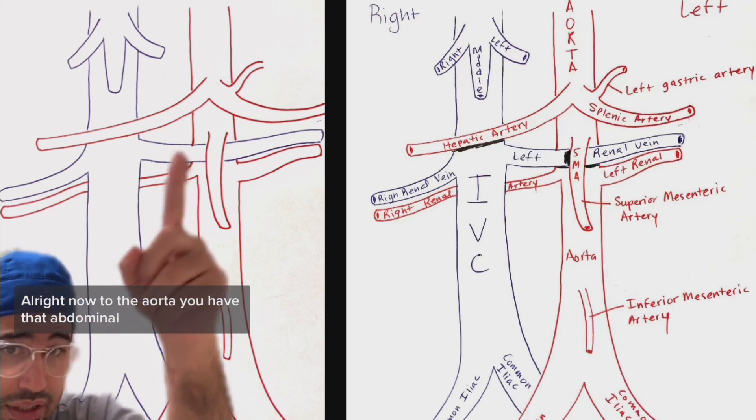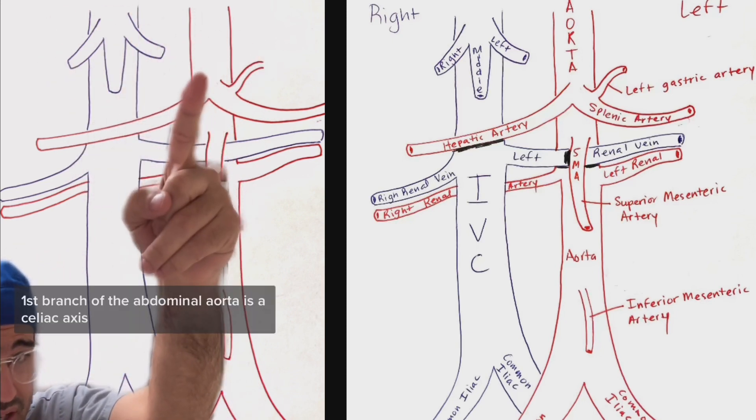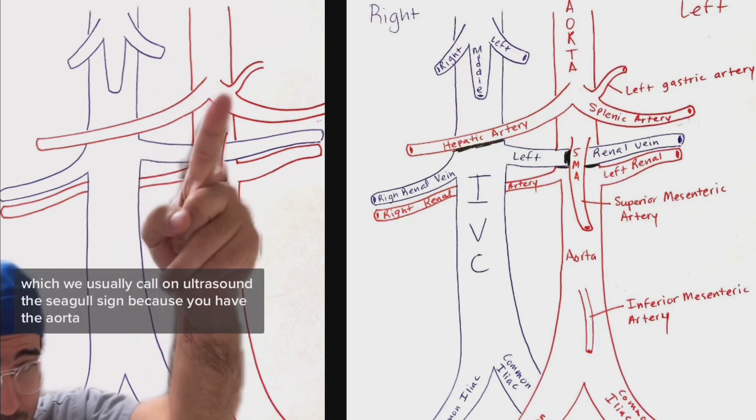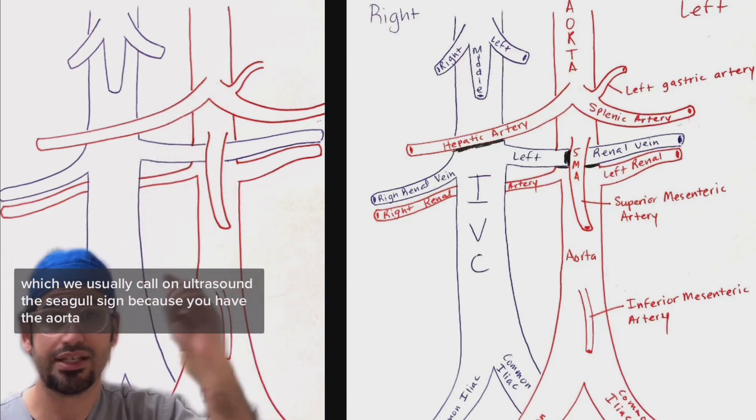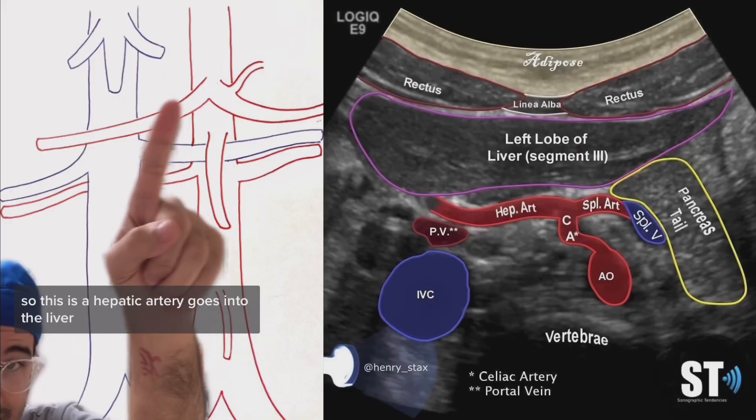All right, now to the aorta. You have the abdominal aorta, your diaphragm would be here. First branch of the abdominal aorta is the celiac axis, which we usually call on ultrasound the seagull sign because you have the aorta and then the two arteries looks like a bird.